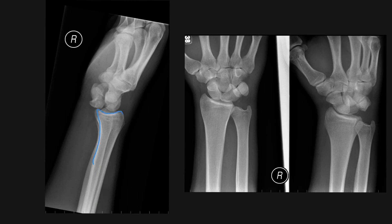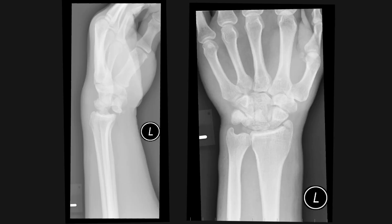Let's take a look at this third example. The distal radius is in line with the capitate, however the lunate has dislocated anteriorly, and this is a lunate dislocation. Again on the PA and oblique views you can see a triangular shaped lunate.